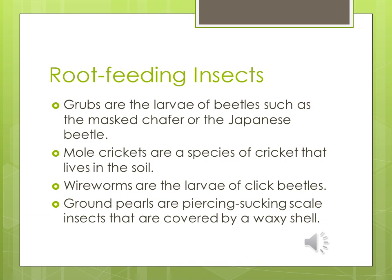Root feeding insects: grubs are the larvae of beetles such as the masked chafer or the Japanese beetle, and are a major problem in lawns. Mole crickets are a species of cricket that lives in the soil. Wireworms are the larvae of click beetles. Ground pearls are piercing insects that also damage turf roots.